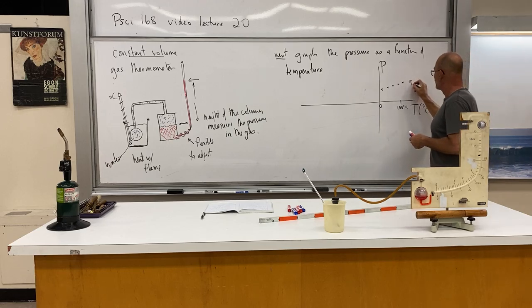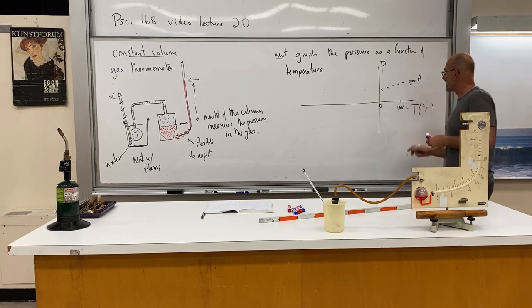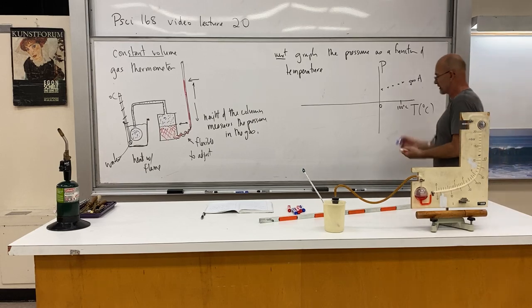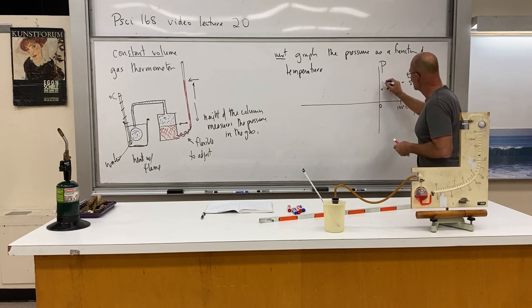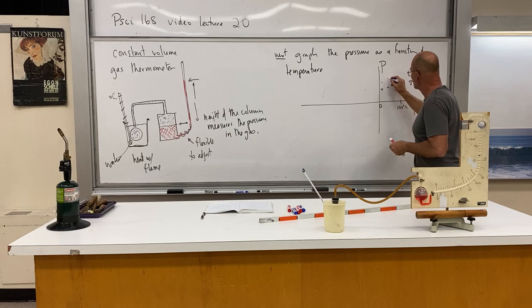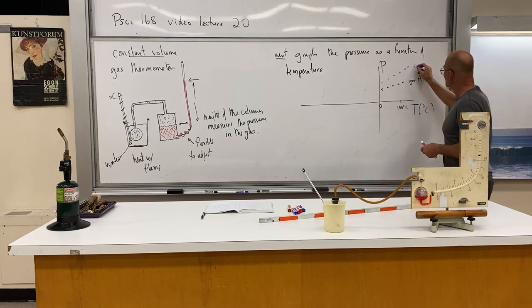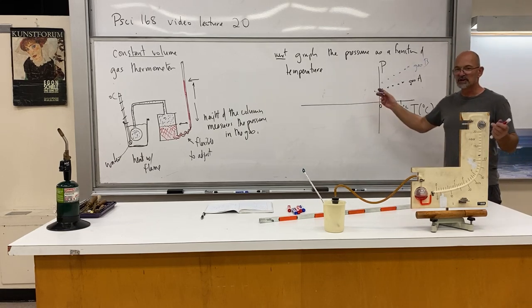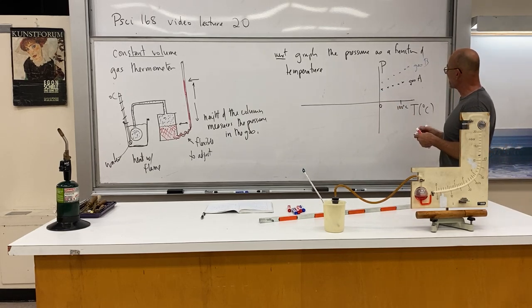And we get a set of data points and you can imagine the pressure increases with the temperature. So the temperature goes up, the pressure goes up. And this is one gas. I'm just going to imagine this is helium. And then we do a different gas. And this is gas B, maybe that would be nitrogen. We can do a few different gases.